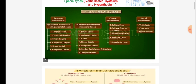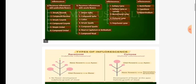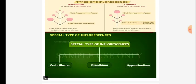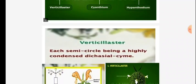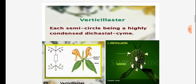Now the special types of inflorescence: first is Verticillaster, then Cyathium, and Hypanthodium. What is Verticillaster? Here you are observing the photograph of the example and the diagrammatic sketch. It is a mixed type — both cymose and racemose are present in this one.